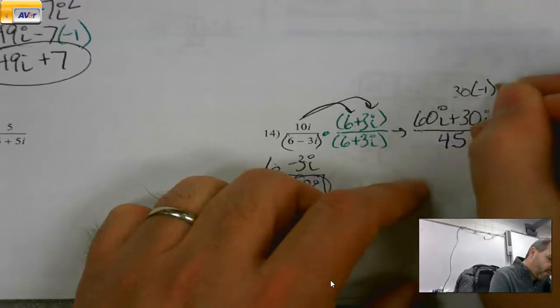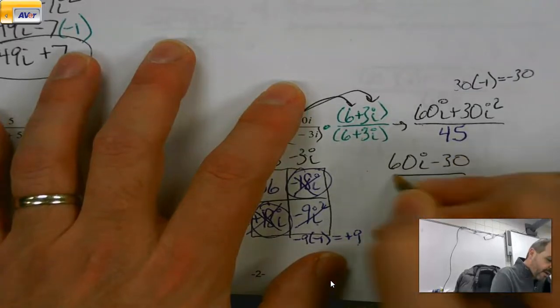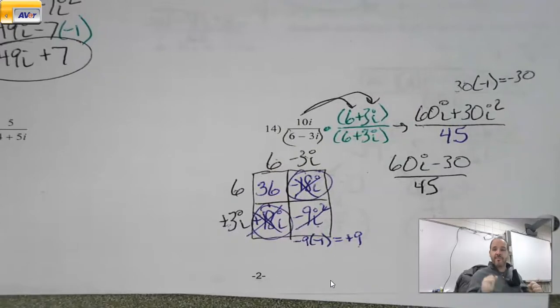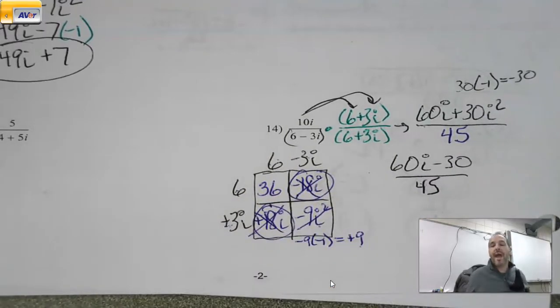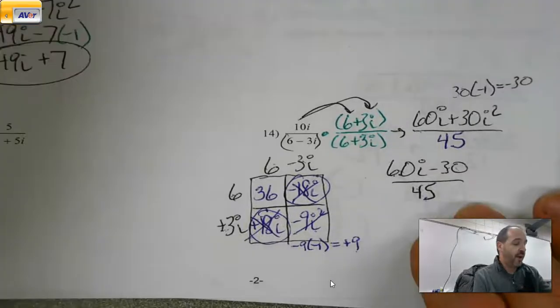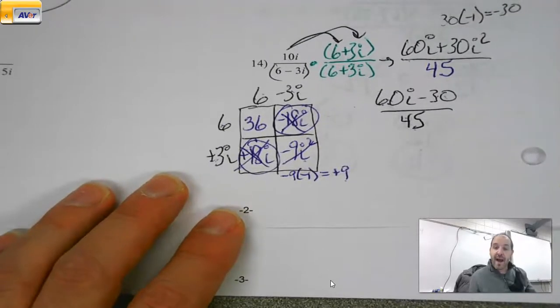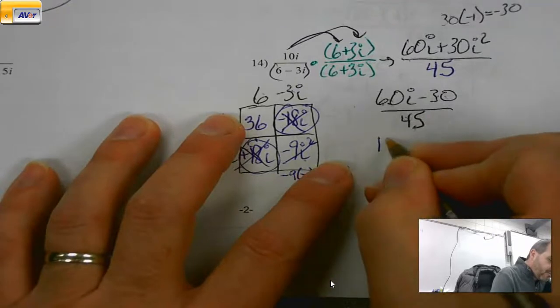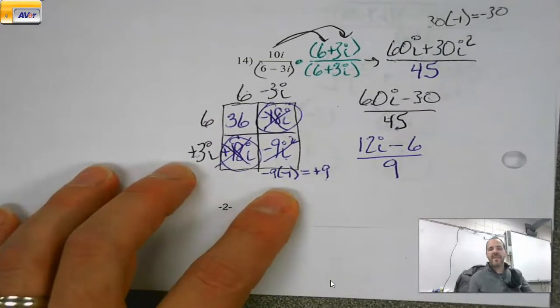So I look at this, and before I combine things, remember i squared is negative 1. So this is negative 9 times negative 1, which would be positive 9. So 9 plus 36 is 45, and negative and positive 18 cancel. Now before we circle that and say we're done, we've got a couple things we've got to take care of here. That i squared is negative 1, so 30 times negative 1 is negative 30. So 60i minus 30 over 45. Almost! If this was the quiz and you put that as your answer, you're probably going to get hit for like a half out of 3. It's not a big deal.